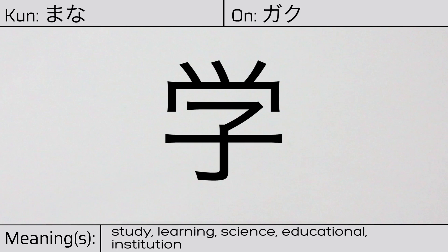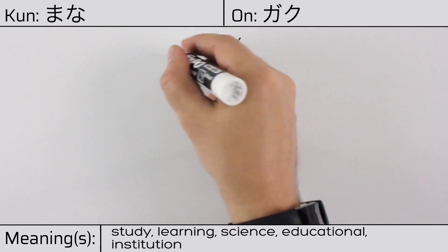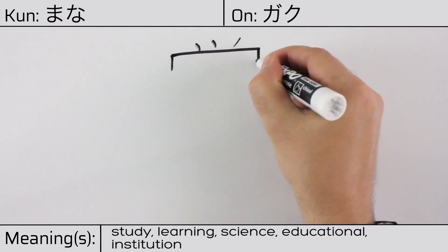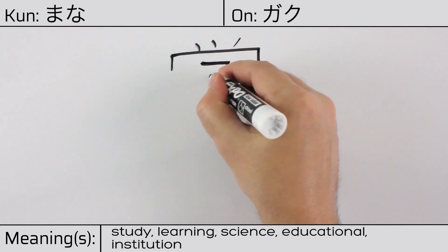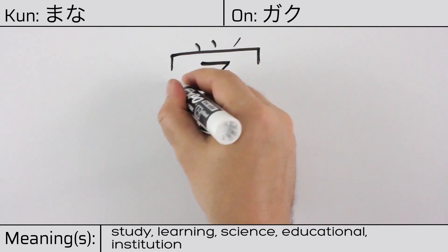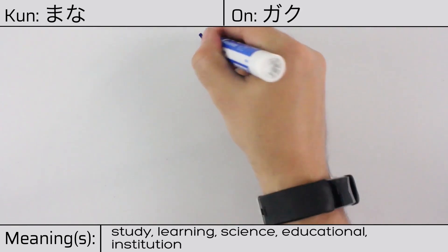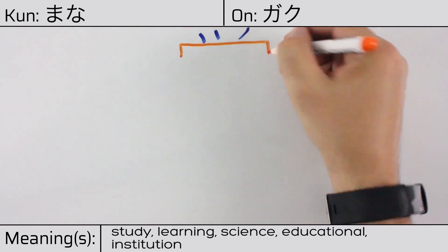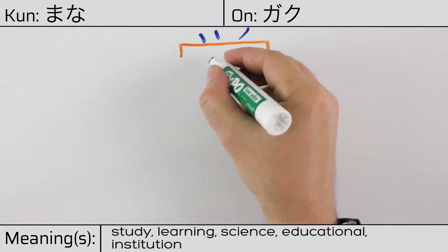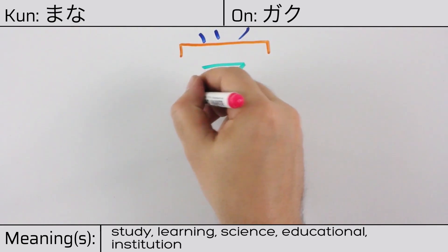Here is the stroke order. This character is made up of the following radicals or parts: Katakana to at the top. Followed by the cover, or crown radical, known as wakanmuri. And the child, or seed, ko, at the bottom.